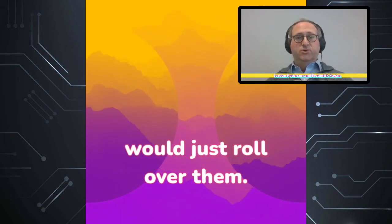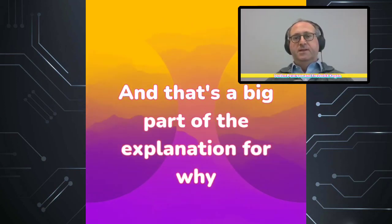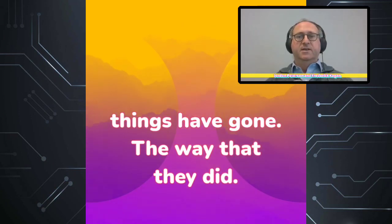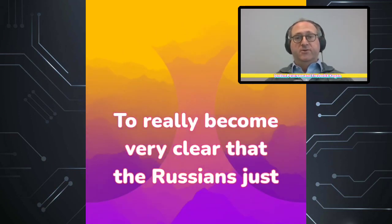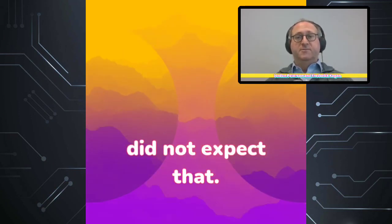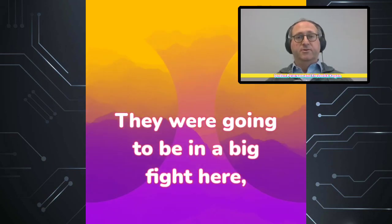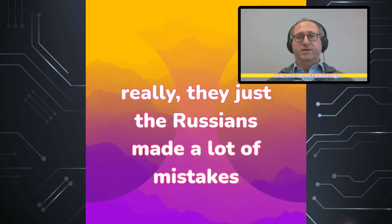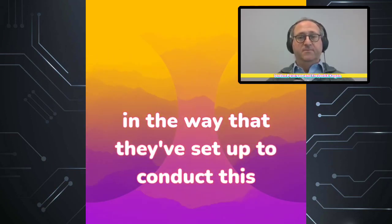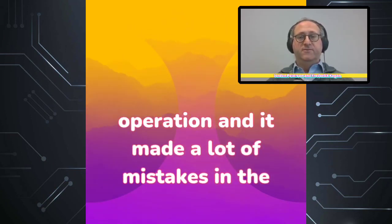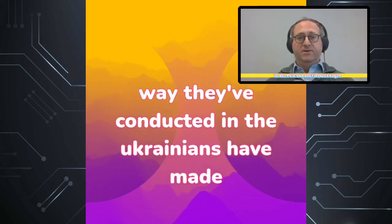The Russians seem to have thought that they would just roll over them. And that's a big part of the explanation for why things have gone the way they did. It's really become clear that the Russians just did not expect a big fight here. The Russians made a lot of mistakes in the way they've conducted this operation, and the Ukrainians have made them pay for almost every one of those mistakes.